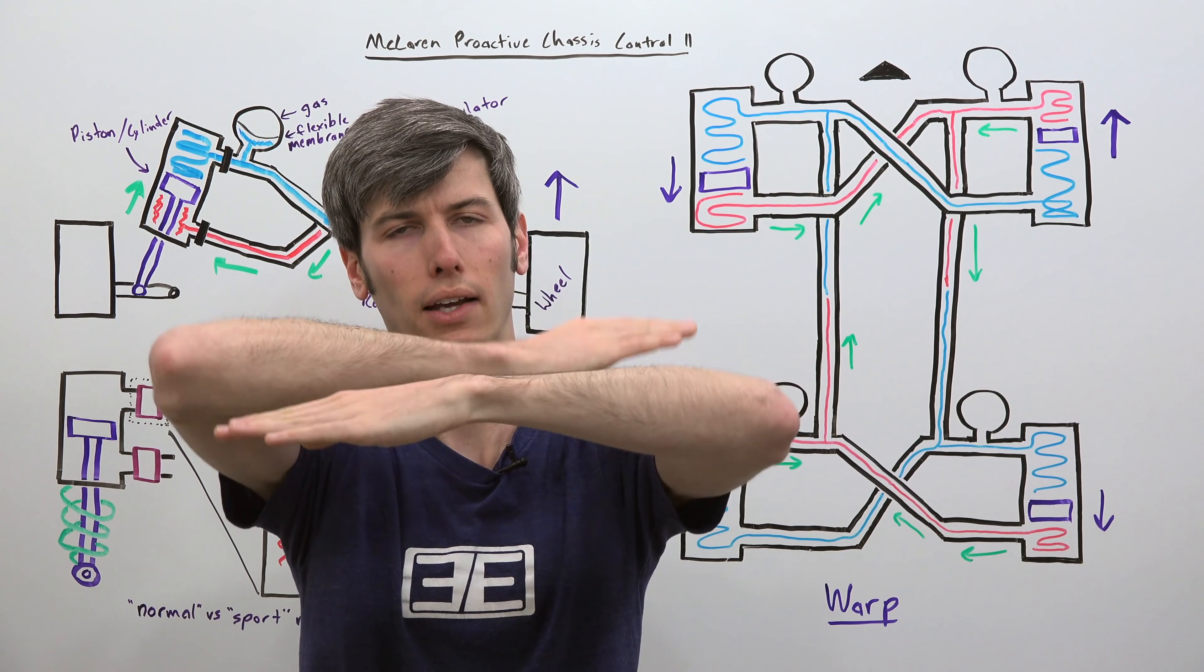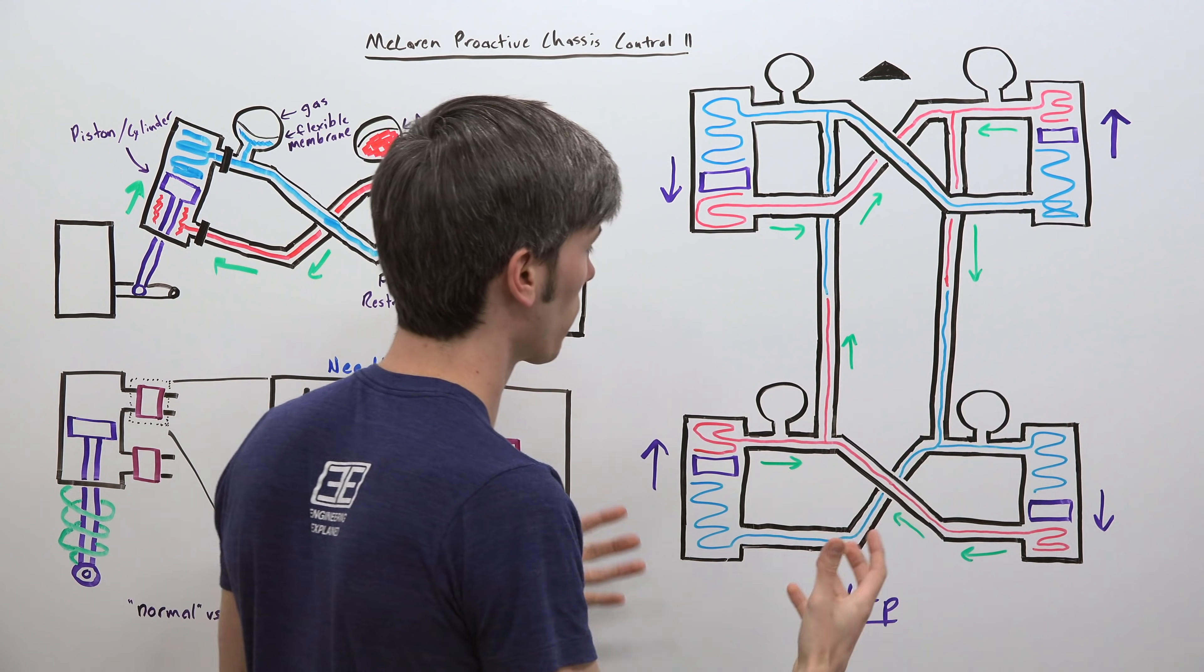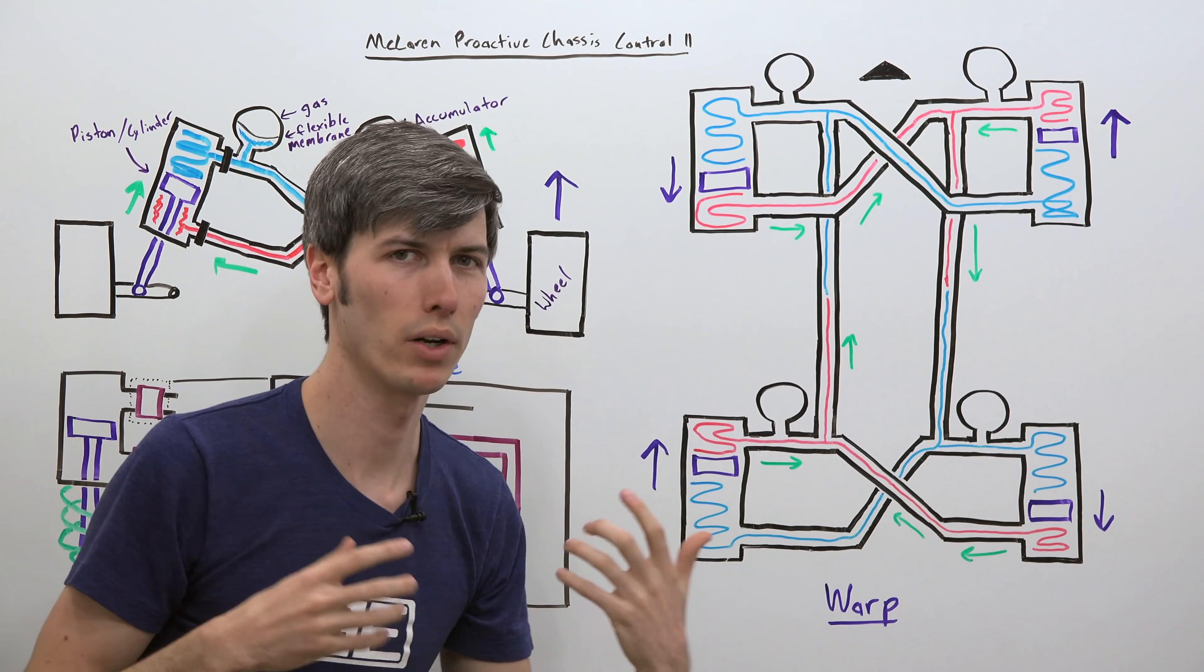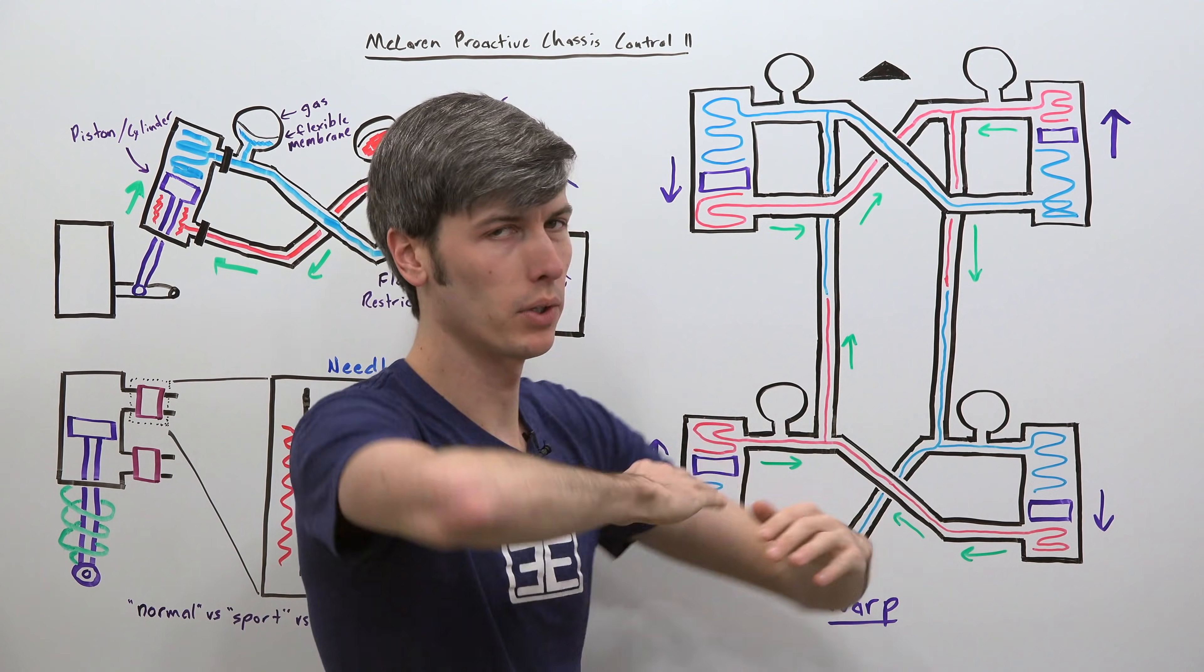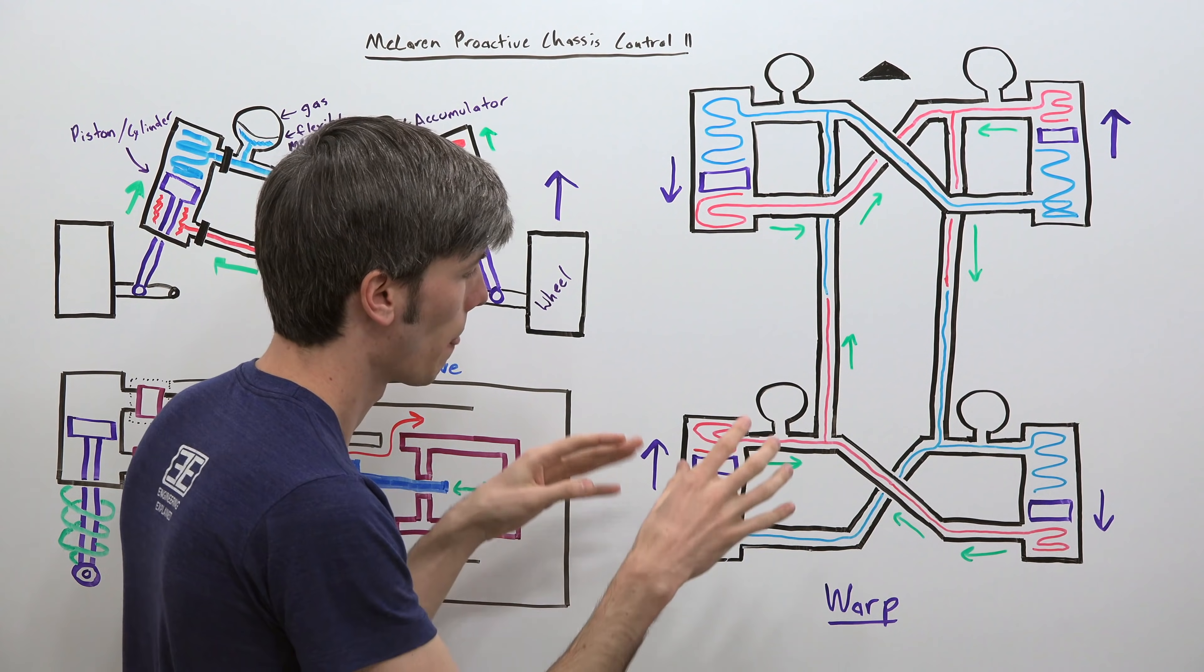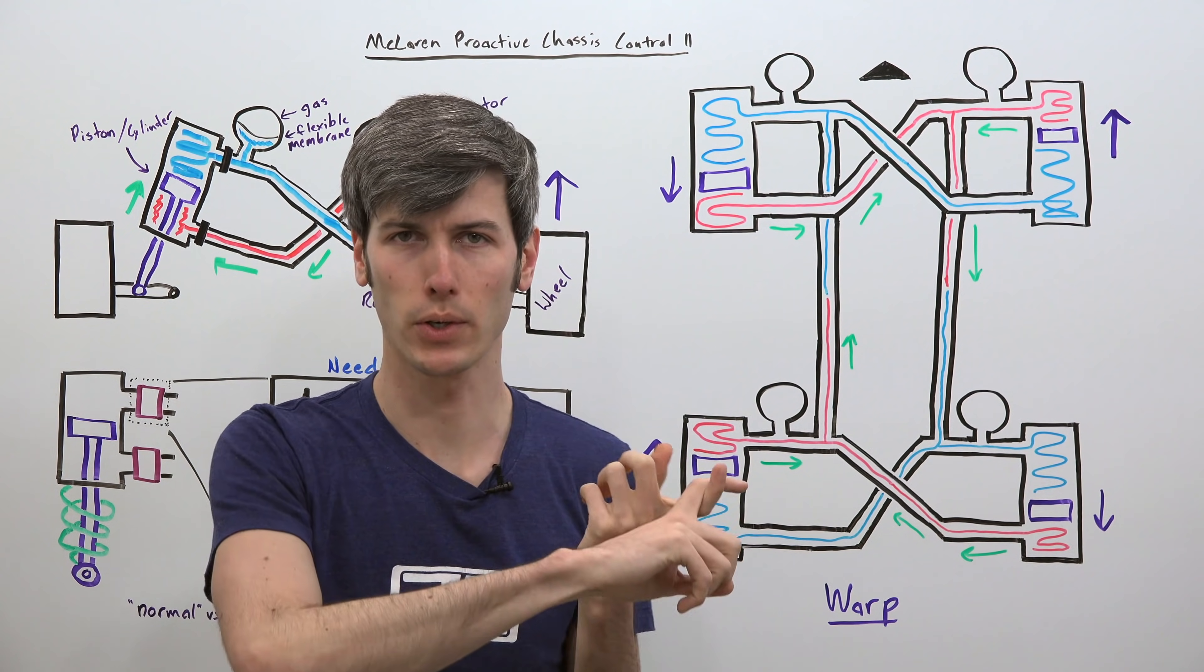So ideally you want a low stiffness in the system for warp but you want a high stiffness in the system for roll. You don't want a lot of body roll but you want to be able to allow those wheels to maintain contact with the ground in warp scenarios. And so with traditional roll bars the stiffness remains the same whether it's warp or it's roll.